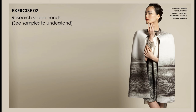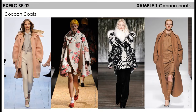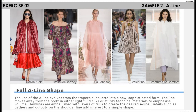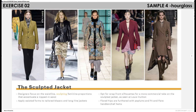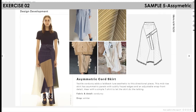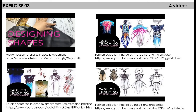Exercise 2: Research shape trends. For example, these are cocoon coats, then full A-line shapes, fluid maxi dresses, sculpted jackets, and asymmetrical cord skirts. At the end, there are full videos where designers are getting inspired by different shapes and creating garments — very important learning videos.